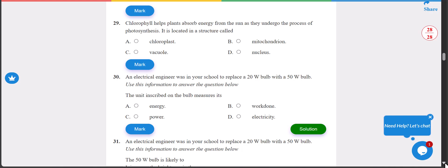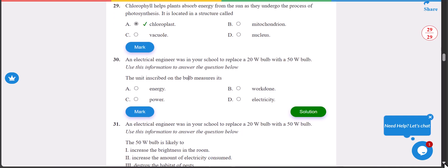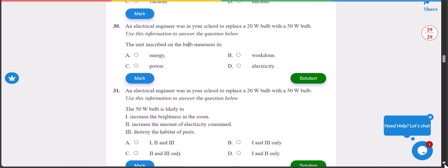Number 29: chlorophyll helps plants absorb energy from the sun as they undergo the process of photosynthesis. It is located in a structure called what? The answer is A, chloroplast. I think this year's science was not all that difficult.